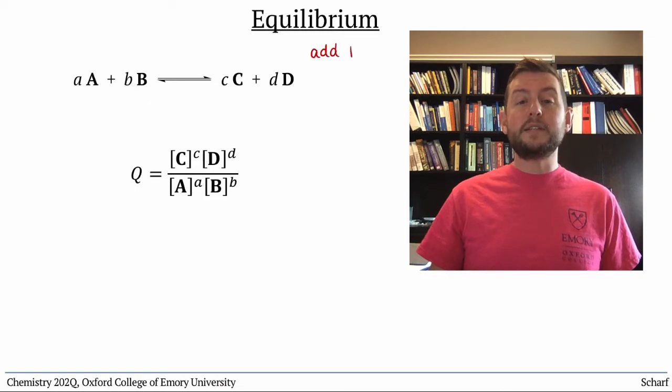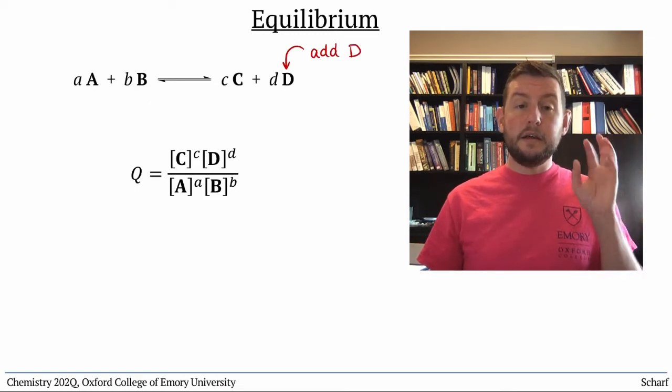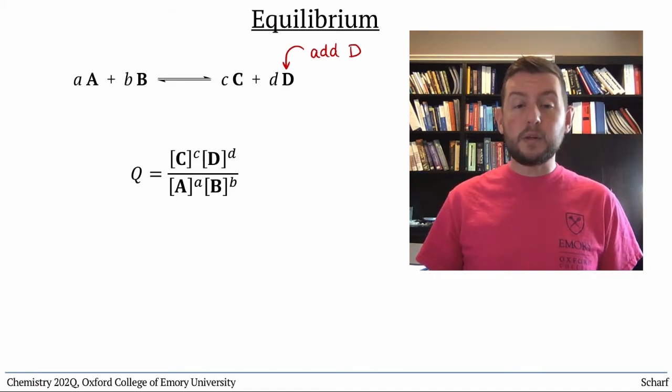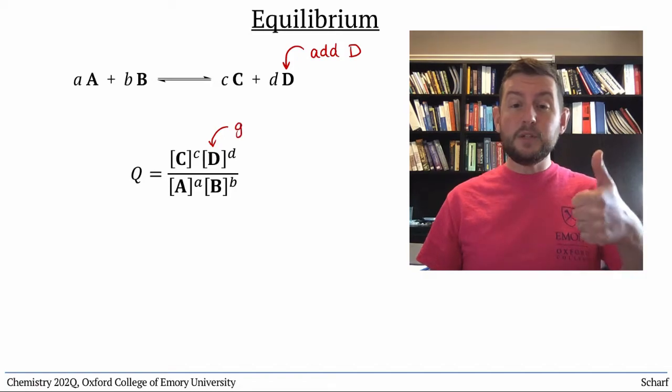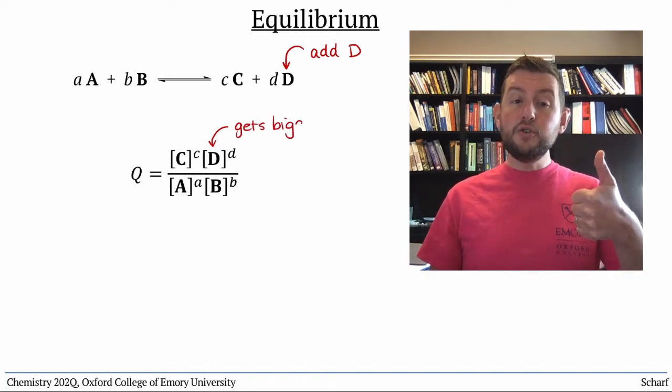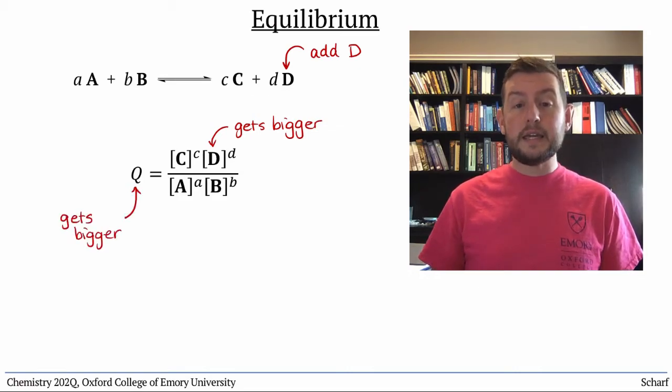Let's see what would happen if we decided to add some product to the reaction flask, again disturbing our equilibrium mixture. The concentration of D would go up, making the numerator bigger and making Q larger than Keq.